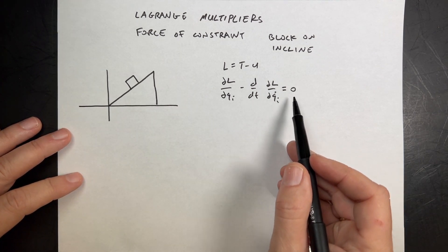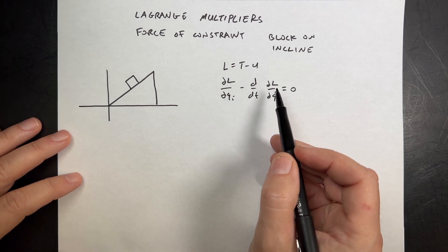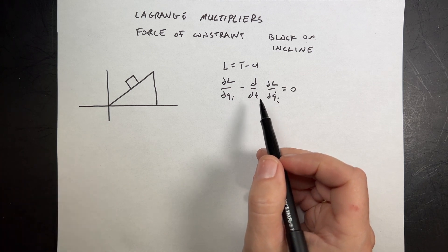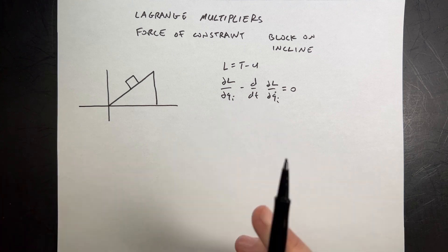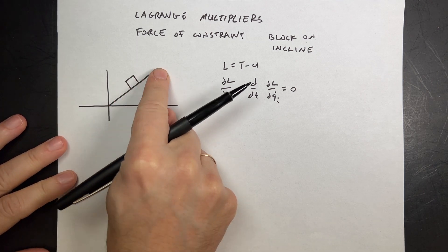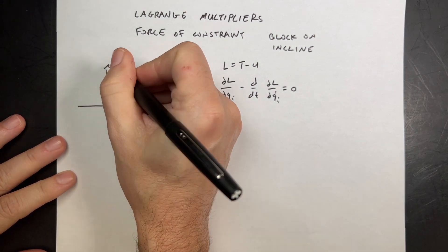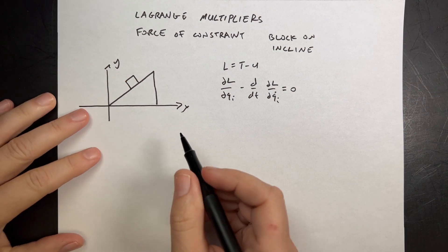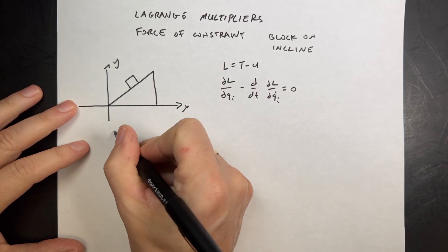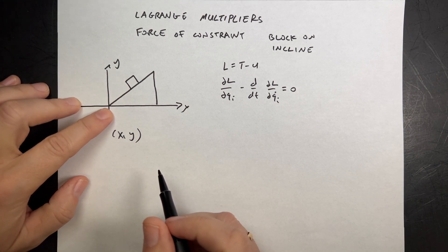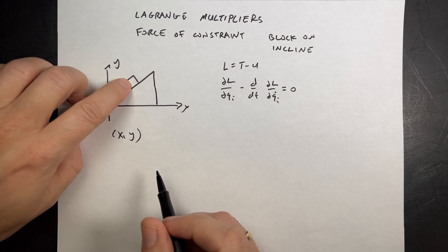Instead of using the Euler-Lagrange equation in the usual way, we're going to do two things differently. Number one, we're going to under-constrain the motion — I'm going to let this block move in not just one dimension but in two: the x and the y direction. So instead of saying it has one degree of freedom, I'm going to let it have two. In this case, it makes sense to use x and y as generalized coordinates.